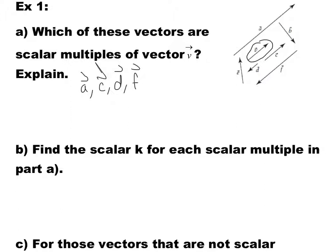Now it says find the scalar K for each scalar multiple in part A. For instance, let's look at vector A. Vector A seems to be about three times the magnitude of vector V. So for vector A, we can say that K is three, because A is in the same direction as vector V, so it's going to be positive, and the magnitude is almost three times. For vector C, we can see that it's the same direction and the magnitude is almost the same as V, so we can say that K is equal to one. For vector D, we can see that D is in opposite direction, so it's going to be negative, and the magnitude is half, so it's going to be 0.5.